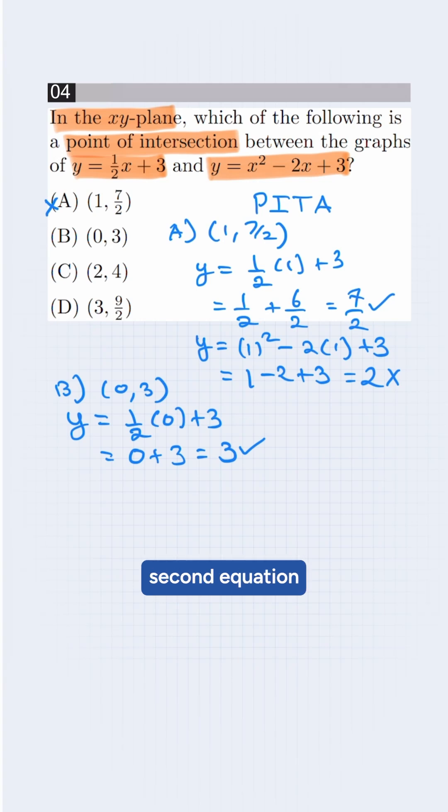Now, we try for the second equation, y equals 0 squared minus 0 plus 3. It will also be 3. This matches with the options, so the correct option will be B. Keep practicing with us.